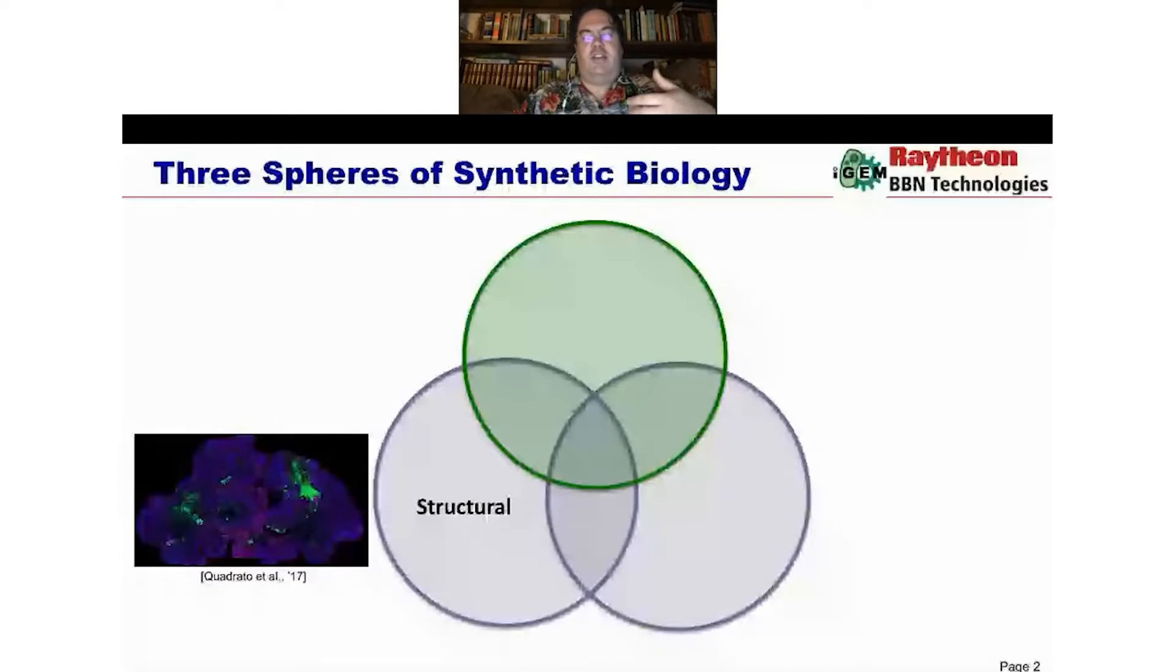So this is where things like the bacterial cellulose project that the Imperial iGEM team did a few years ago goes. We're really caring about this large scale material product. Or where work on tissue engineering and organoids goes, where we're interested in a macro scale structure.